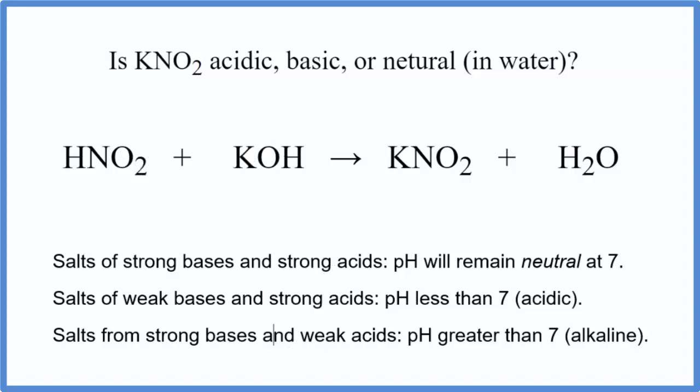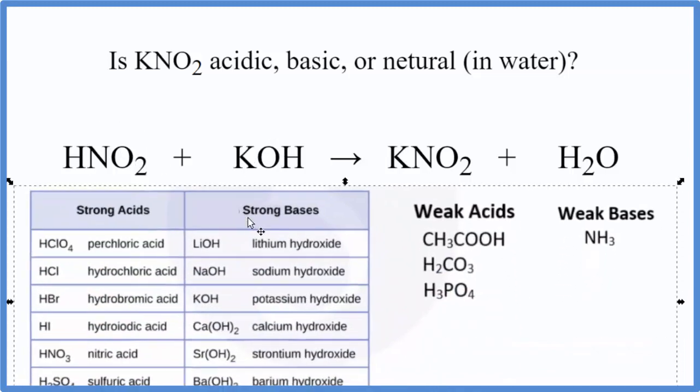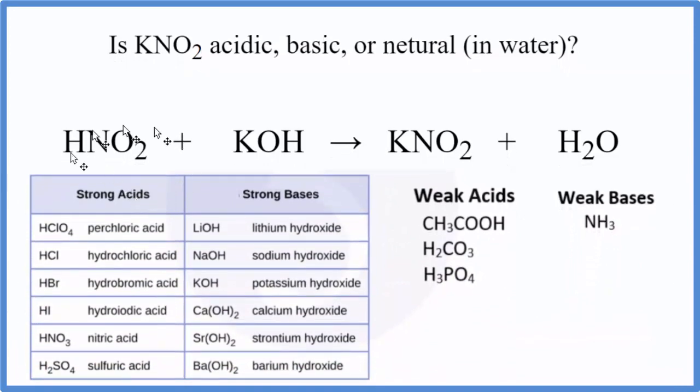To do that, we can use this table here. So we look on our table. Let's look for HNO2. We don't see it under the strong acids. It's also not listed under the weak acids, but if it's not under the strong acids, we can assume that this is going to be a weak acid.